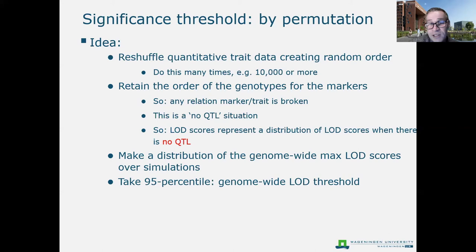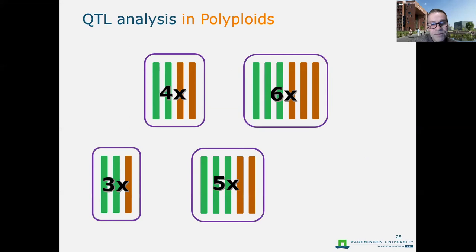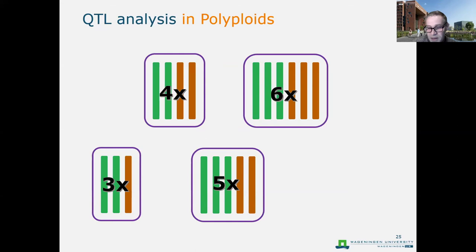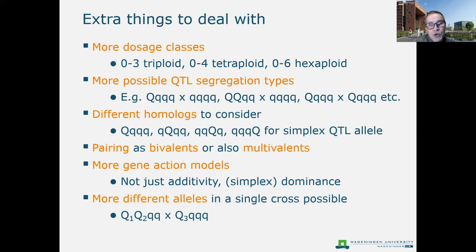Moving to the situation in polyploids: we could have different ploidy levels — tetraploid, hexaploid, triploid, pentaploid — but we use quite similar principles as before. However, we have to account for a number of extra features. We have more dosage classes: in a diploid the highest dosage is two; in a triploid, zero to three; in a tetraploid, zero to four; in a hexaploid, zero to six.